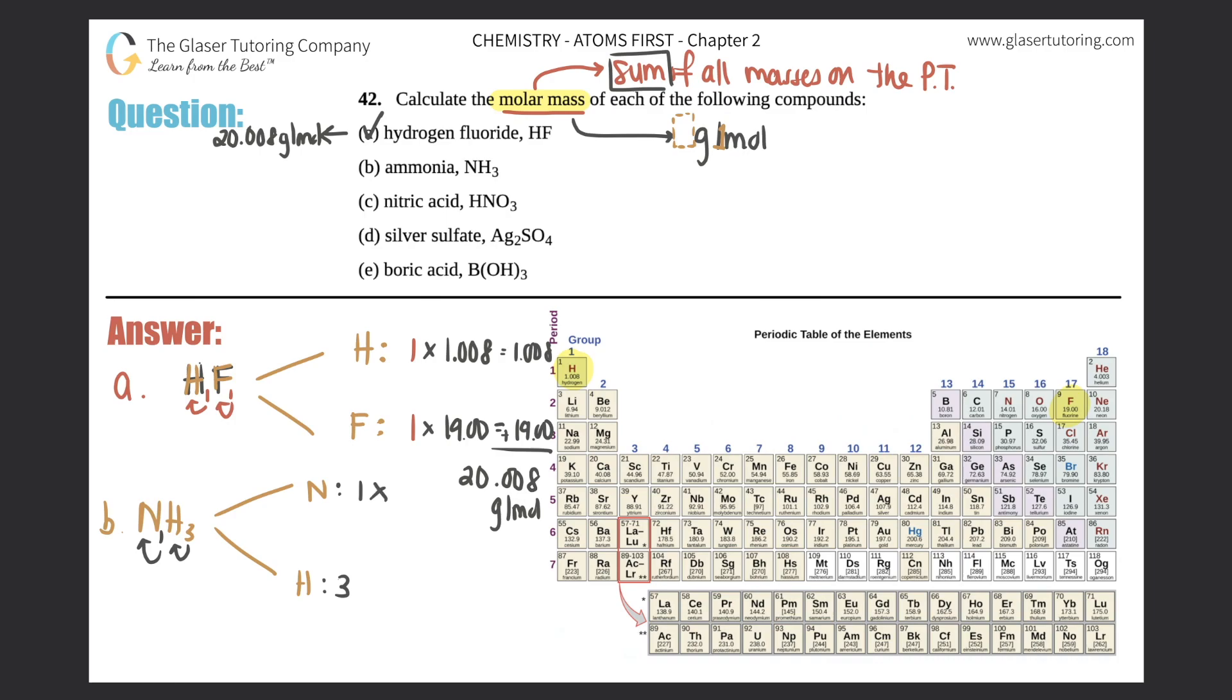Now when we say that, then we can times them by their weights. Nitrogen on the periodic table is over here, 14.01, so one times 14.01 is 14.01. And then hydrogen we found before was 1.008, so three times 1.008 you get 3.024. Now what do you do? You will add them. So 3.024 plus 14.01 is 17.034 grams per mole.